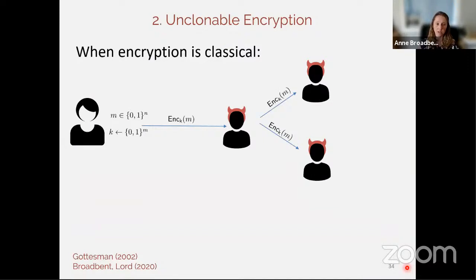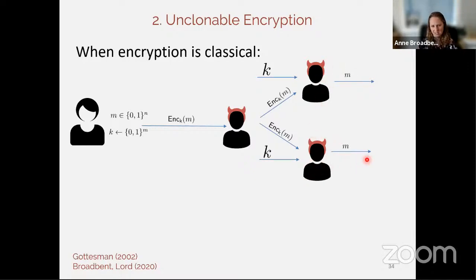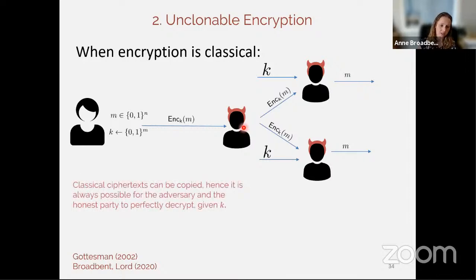I want to show another example of unclonable information: unclonable encryption. Think about a classical encryption scheme — Alice has a message and encryption key k, she sends the ciphertext to an adversary. It's always possible for the adversary to create two copies of that ciphertext. Suppose eventually the key is leaked; then each adversary has a copy and each can decrypt. The message m appears twice — both adversaries have it by virtue of the middle adversary simply copying the ciphertext. Observation: classical ciphertext can be copied.